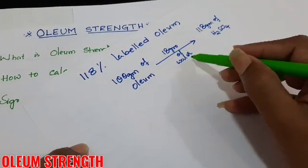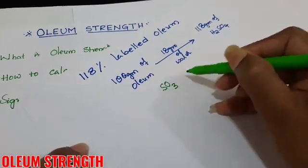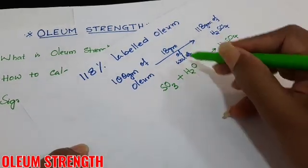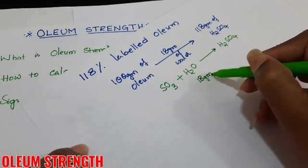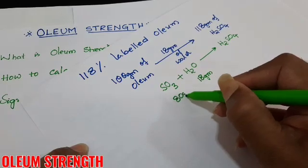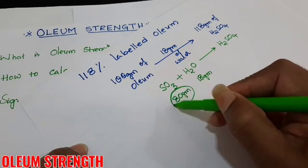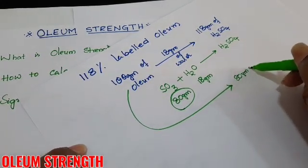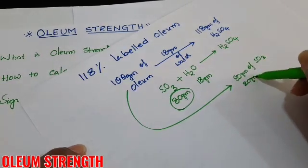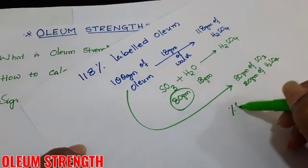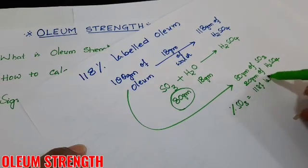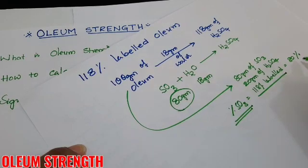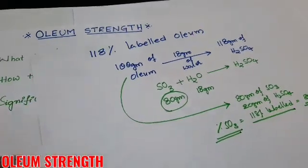Here, 18 grams of water reacts with the oleum. As per our balanced equation, SO₃ + H₂O → H₂SO₄, 80 grams of SO₃ is required for 18 grams of water. Since 18 grams of water is involved, 80 grams of SO₃ is present. The sample also contains 20 grams of sulphuric acid. Therefore, the percentage of SO₃ in 118% labeled volume is 80%.